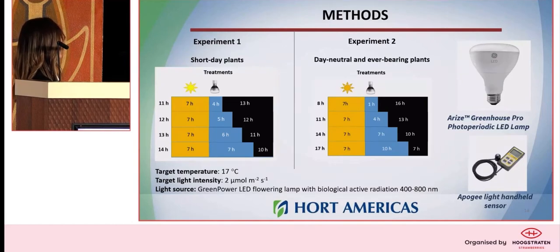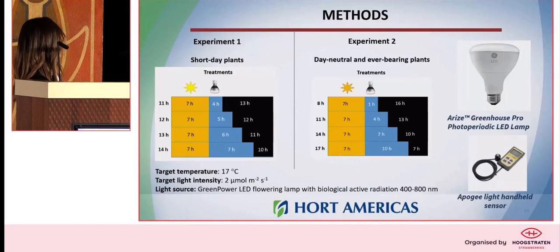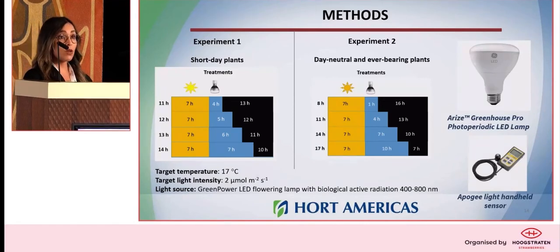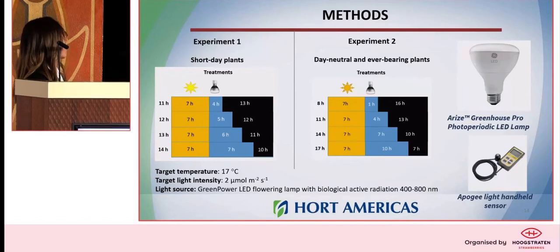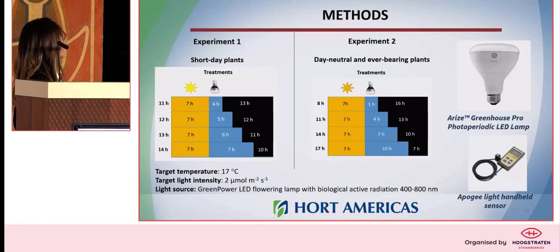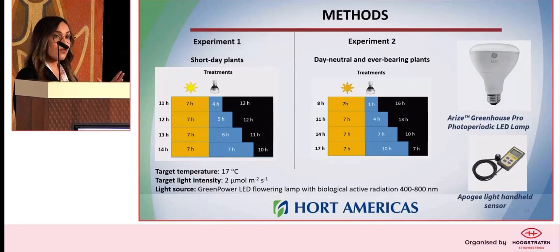For these treatments, we maintained the plants inside of the greenhouse for seven hours, so all plants were under the same light. We did different treatments: for short-day plants, we did 11, 12, 13, and 14 hours; and for day-neutral, we did 8, 11, 14, and 17 hours. The plants were exposed seven hours in the greenhouse, and we created the photoperiod by moving the plants to a growth chamber and exposing them to a photoperiodic lamp that delivers very low light intensity. We know plants respond to photoperiod from as low as two micromoles, which is almost nothing of light. This way, we created the rest of the photoperiod without creating different DLI per treatment.